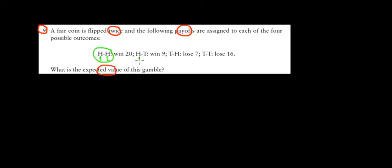Let's look at another option. We could have head on the first flip, tail on the second flip. That's the second option. We could have tail first and the second one head. That's the third option. And we could have tail on the first flip and tail on the second flip. And that's the fourth option.